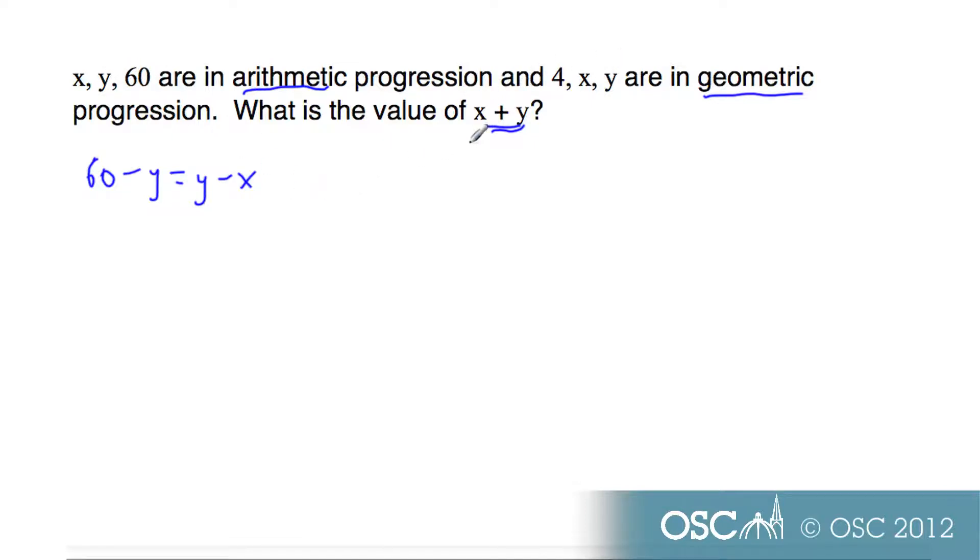We also know that, because these are geometric, y divided by x is the same as x divided by 4. And in higher level, you often end up with this situation where you have non-linear simultaneous equations. So, adding y to both sides, we have 60 equals 2y minus x. And here, let's let y equal x squared over 4, multiplying by x on both sides.